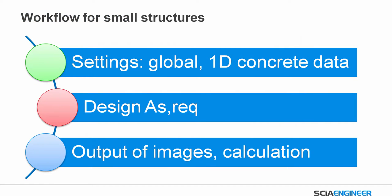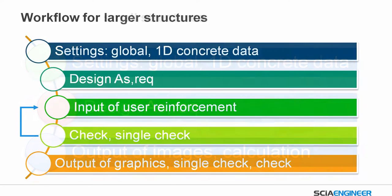Here you can see the workflow for small structures: begin with global settings, do some concrete data to override things, then do the reinforcement design, and afterwards output images and calculation. For larger structures, design only is not enough. The first step is also settings, then design, then input of real reinforcement. Then we can do a check — if the check doesn't satisfy, we input more user reinforcement and do the check again. When it's OK, we output graphics, the single check, and the calculation.